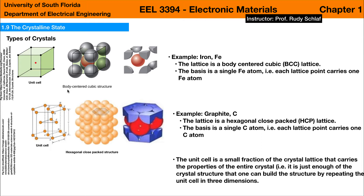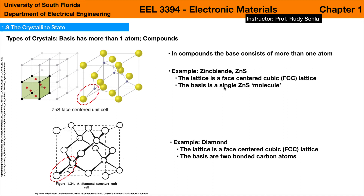These structures are called unit cells of the crystals. The unit cell is defined as a small fraction of the crystal lattice that shows all the properties of the entire crystal. It needs to be just big enough to have the entire crystal structure visible, and repeating the unit cell would then yield the entire crystal without any additional information.